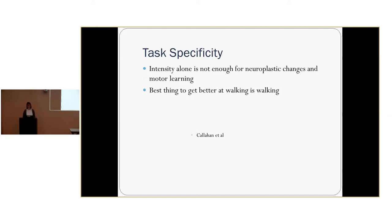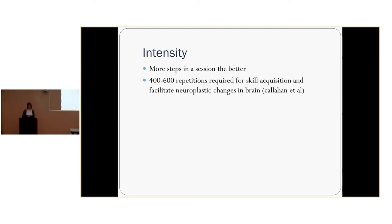Intensity alone is not enough for neuroplastic changes and motor learning. The best thing to get better at walking is walking — doing pre-gait activities are probably not going to help the patient get better at walking. Walking has to help for walking. The more steps you get in the session, the better. It takes 400 to 600 repetitions required for skill acquisition and to facilitate neuroplastic changes in the brain.